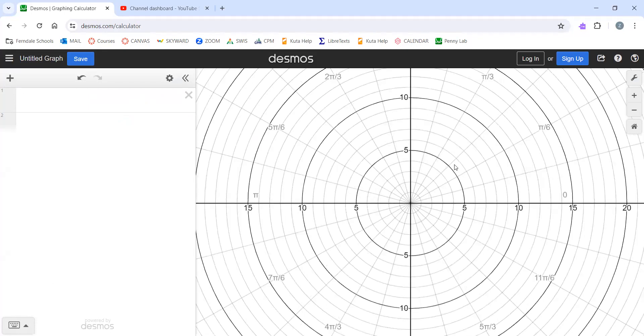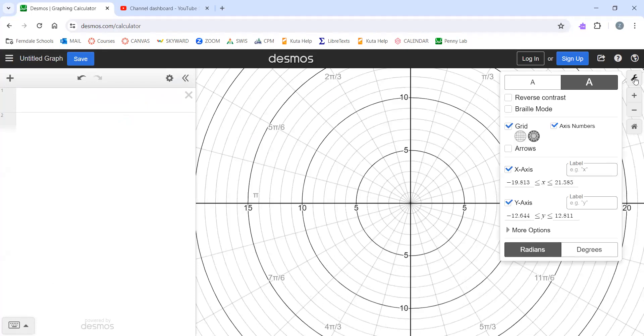Actually, maybe I'll leave those numbers on. If the numbers get in your way, you can always come in here and uncheck axis numbers, but I think I'll leave these on. And I'm leaving my angle in radians.